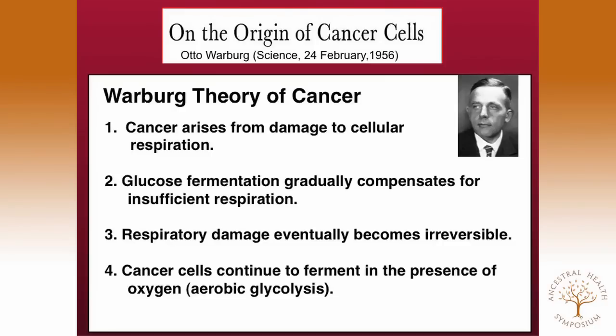If cancer is not a genetic disease, what kind of disease is it? Otto Warburg, many years ago, showed that all cancer arises from damage to cellular respiration, glucose fermentation gradually compensates for inefficient respiration, and respiratory damage eventually becomes irreversible — cancer cells continue to ferment. He was primarily talking about glucose. We have expanded this now to include glutamine fermentation. Tumor cells can ferment not only carbohydrates but also some amino acids, in particular glutamine. If we don't target glutamine, we won't get complete management of the disease, although targeting glucose will certainly be very effective.